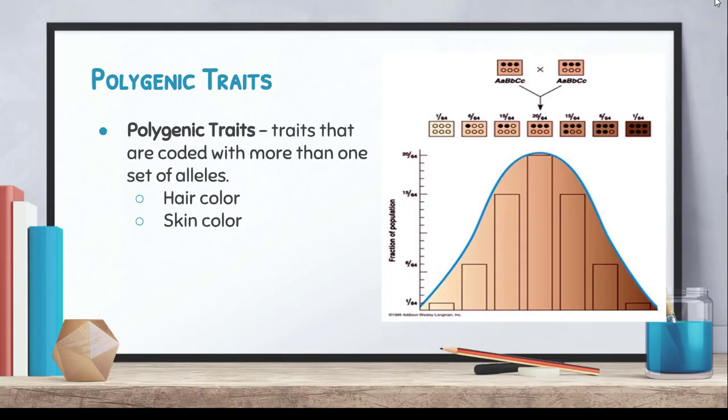The last topic is polygenic traits — traits coded by more than one set of alleles. Think about hair color or skin color: there's not just one allele for hair color. People have strawberry blonde, dirty blonde, red, dark jet black hair, and many more varieties. Same with skin color. There are a variety of alleles coding for these traits, which is why they're called polygenic — poly meaning more than one.